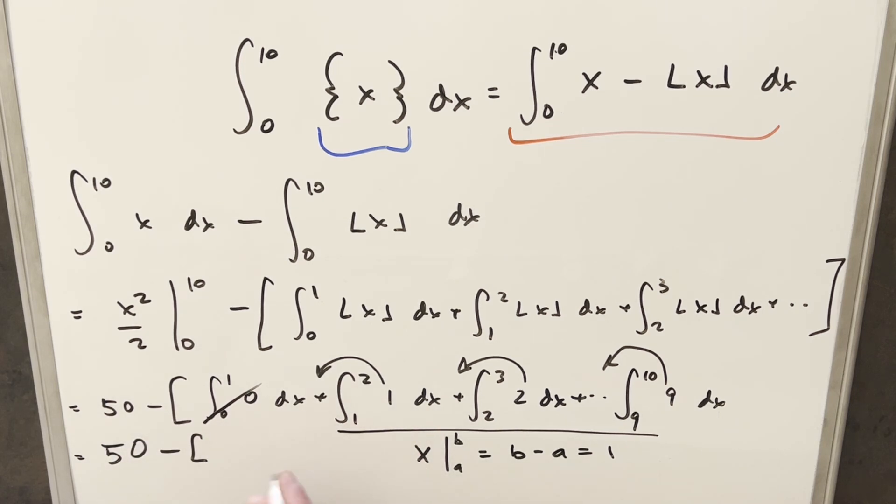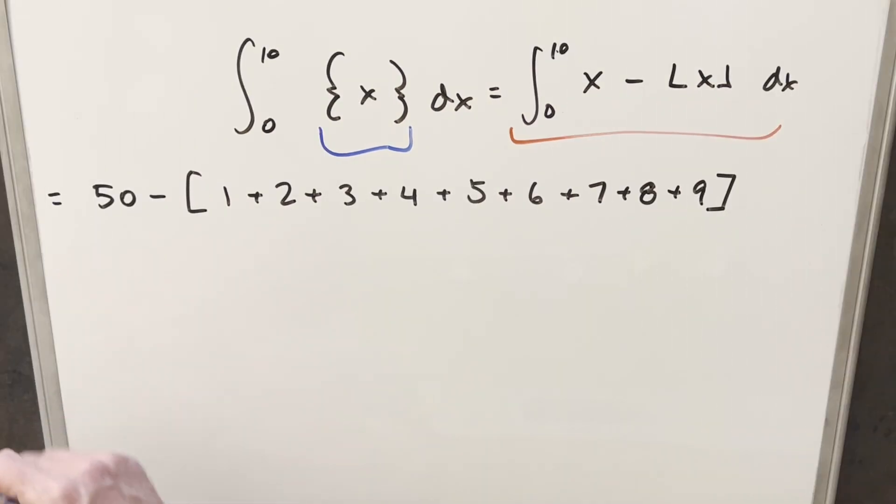And just write this as 50 minus the first one's just going to be 1. The second one's going to be 2. The third one's going to be 3. And this is going to continue all the way to this last value, which is just 9. So now to finish it off, all we need to do is just add up all the numbers from 1 to 9, subtract it from 50, we have our answer.